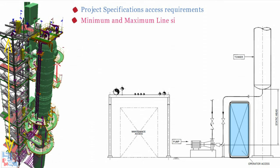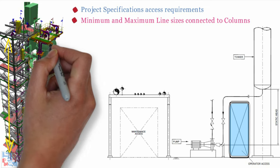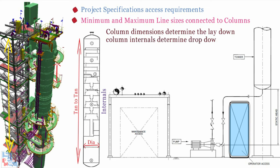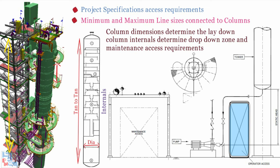Multiple columns should be located preferably parallel to the pipe rack. Project specifications access requirements. Minimum and maximum line sizes connected to columns. Column details like diameter, tangent to tangent line elevation, column internals, etc. Column dimensions determine the lay down and column internals determine drop down zones and maintenance access requirements.